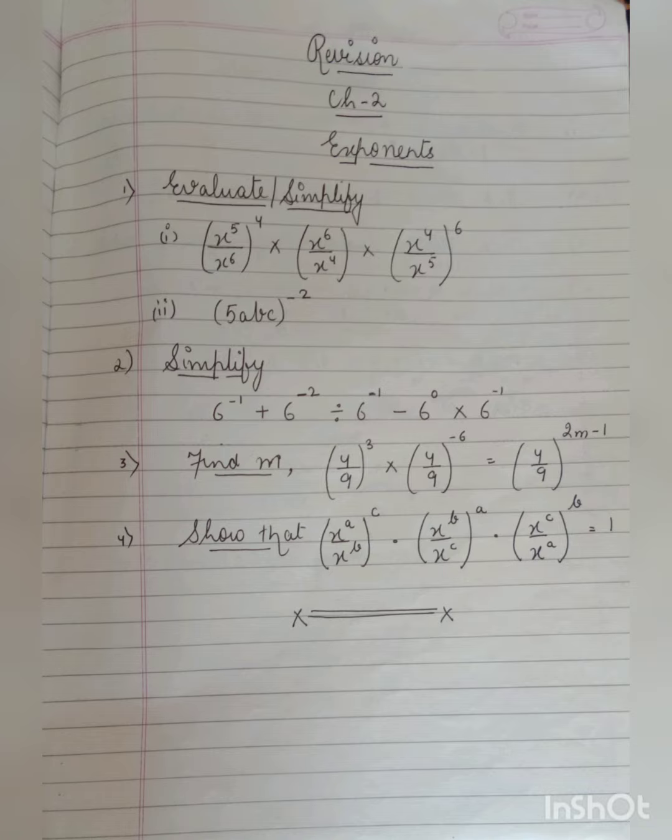Find M. 4 upon 9 to the power 3 multiplied by 4 upon 9 to the power minus 6 is equal to 4 upon 9 to the power 2M minus 1.